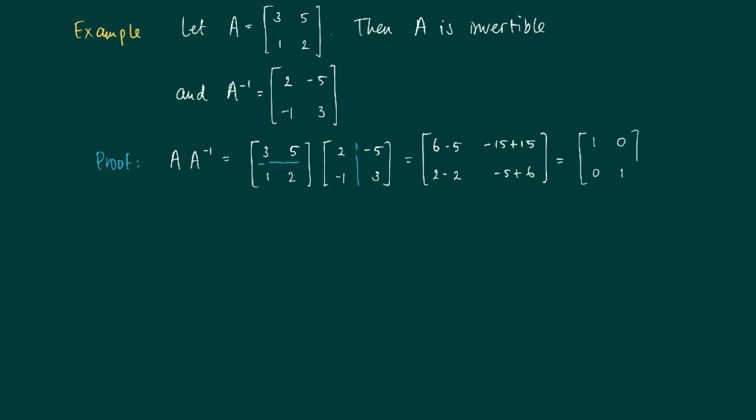If we carry out these calculations, we get 1 here, 0 there, 0 there, and 1 there. This equals the identity matrix, the 2 by 2 identity matrix.